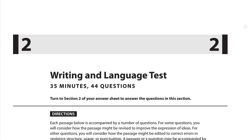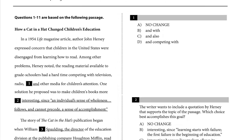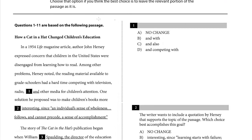In this lesson, we'll begin a review of Writing Test 10, Section 2. We're now on the first passage out of 4: 'How a Cat in a Hat Changed Children's Education.'